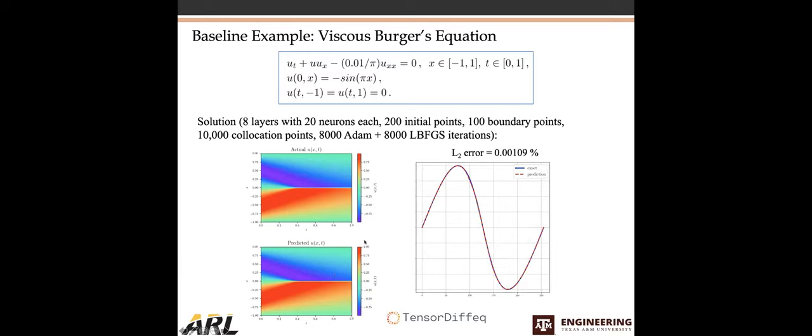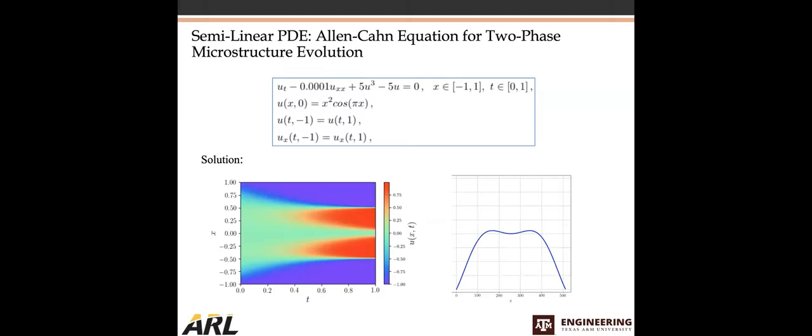So where does it start to fall apart? And so we'll go to a slightly more advanced case here. In this case is the Allen-Cahn equation for two phase microstructure evolution. So we do a lot of work in materials informatics between what we do at Texas A&M and with the Army Research Lab. And so this is the application space that we're primarily interested in is materials. And so being able to approximate the Allen-Cahn equation, interestingly enough, this is also an example from Raissi's paper, and they solved it using a discrete PINN, a Runge-Kutta type PINN. But what happens when you apply the baseline PINN to that and try to solve it using just that architecture?